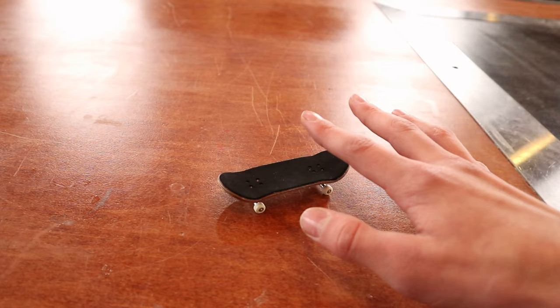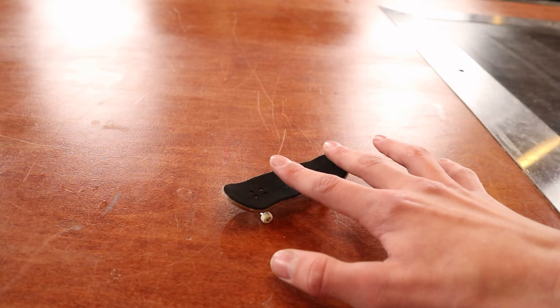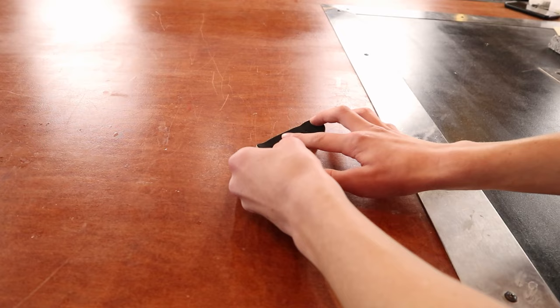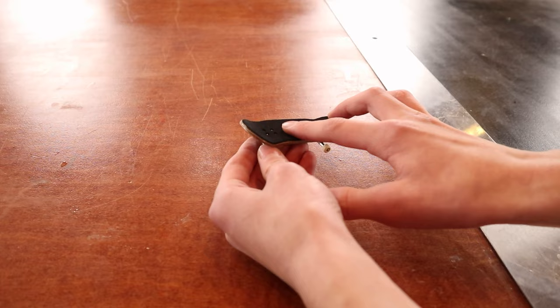You want to have your middle finger on the very tail of the board. This is the nose, this is the tail. I like to have my fingers about here on the board. The flipping motion is you want to pop the board up like this. What ultimately flips the board is sliding your fingers to one side like this, making the board flip like that.